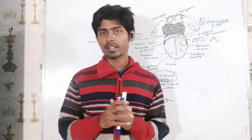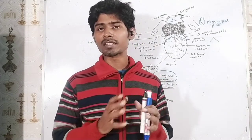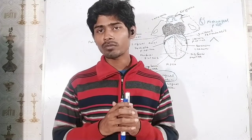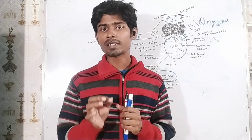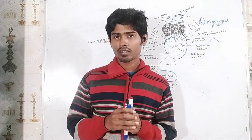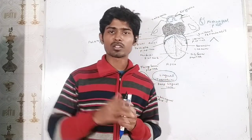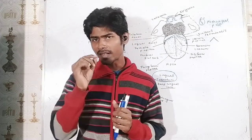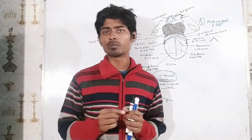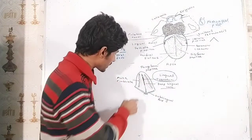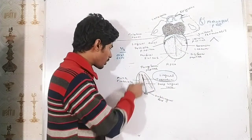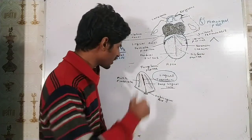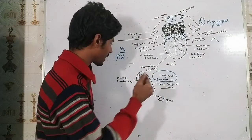What is the tongue? The tongue is an accessory digestive organ which is made up of skeletal muscles. It is located on the floor of the mouth and is attached centrally by a fold called the lingual frenulum. 'Lingua' means tongue.